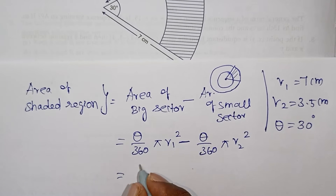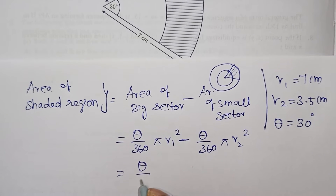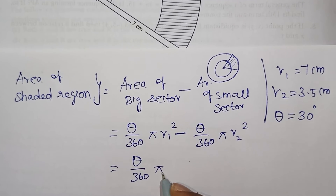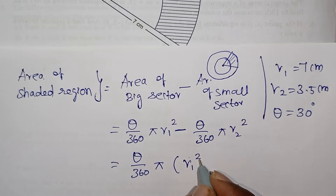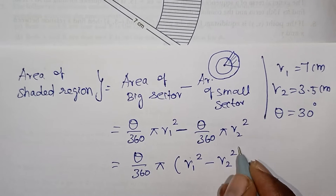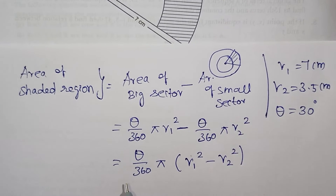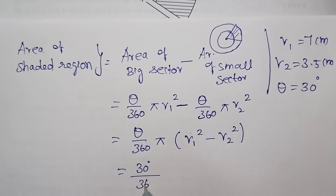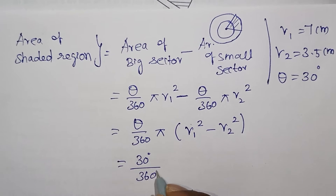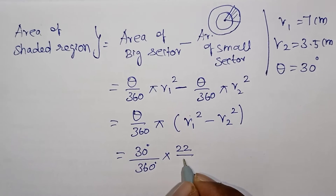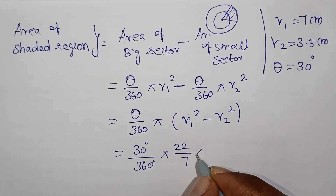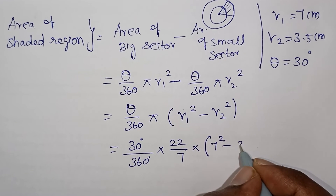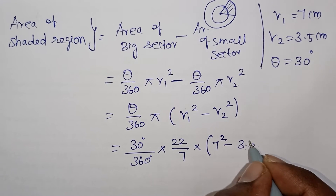Taking common terms: theta by 360 and pi are factored out, leaving R1 squared minus R2 squared. The theta value is 30 degrees by 360, multiplied by pi value 22 by 7, multiplied by R1 squared which is 7 squared, minus R2 squared which is 3.5 squared.